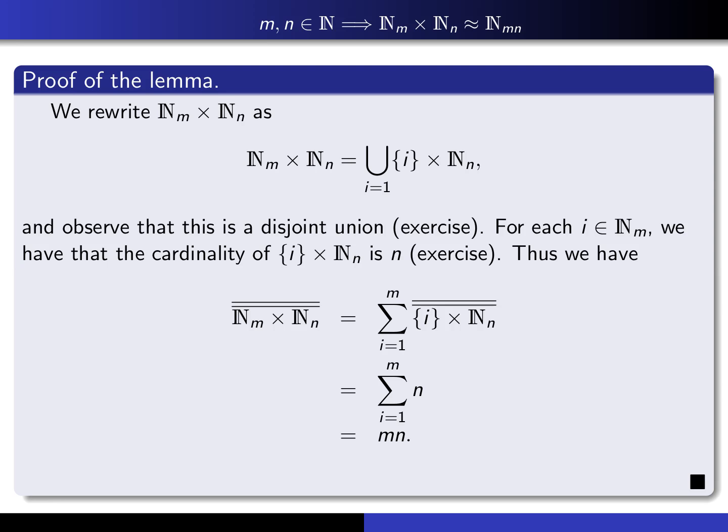So here's the proof of the lemma. We rewrite Nₘ × Nₙ as a union — as i runs from 1 up to m — of {i} × Nₙ. This is what was suggested by the picture on the previous slide. It's very easy to prove that these two sets are equal. Now observe that it's a disjoint union, because if you take two different sets in this union, their first components will differ, and therefore by the definition of equality of ordered pairs, no element can have two different first components. Therefore it's a disjoint union.